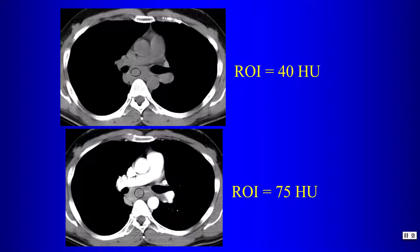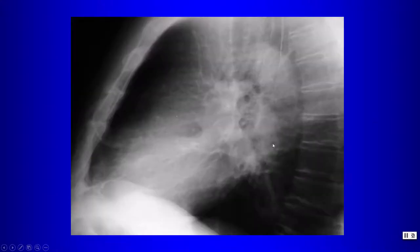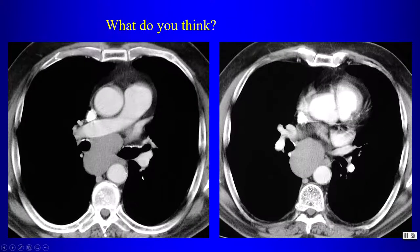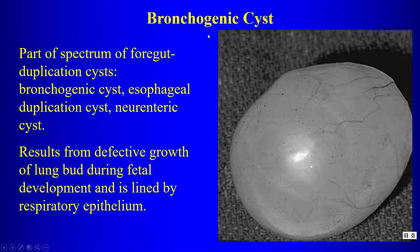Even in the typical location for a bronchogenic cyst, it is important to perform non-contrast and post-contrast imaging to check for enhancement and differentiate a cyst from a solid mass. Here is another subcarinal lesion — well-circumscribed on chest radiograph, and on CT it is higher in attenuation than simple fluid. However, on non-contrast imaging it is dense, and post-contrast there is truly no enhancement: this is a bronchogenic cyst.